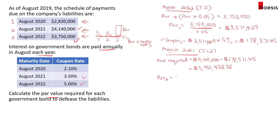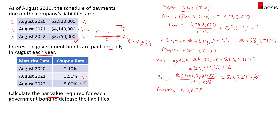We then calculate the par value for the two-year bond the same way as before: take the cash required of $3,961,428.55 and divide by 1 plus the coupon rate for the two-year bond (3.5%), giving us $3,827,467. The coupon for the two-year bond is the par value multiplied by the coupon rate, which equals $133,961.35.